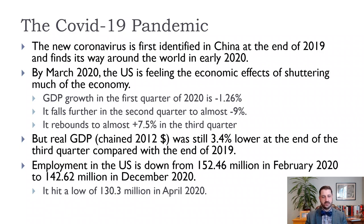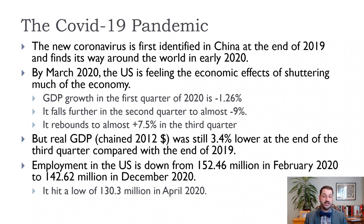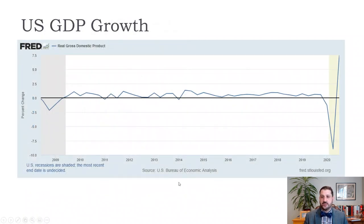This is a very different kind of recession because it's not about demand — it's not that people aren't buying enough so firms don't need as many workers. It's really about the fact that we can't do a lot of the things we usually do: we can't go traveling, we can't go to the movies, we can't go to restaurants. So it's a very unique situation compared to most recessions. Looking at US GDP growth, this graph goes back to about 2008-2009 and we can see that recession from the financial crisis.